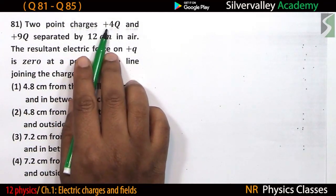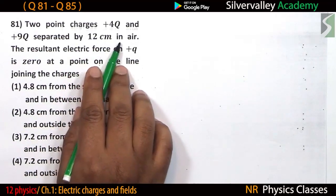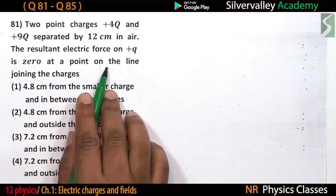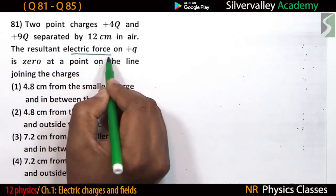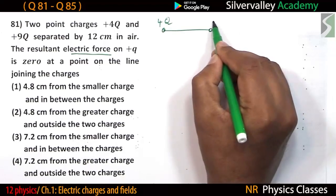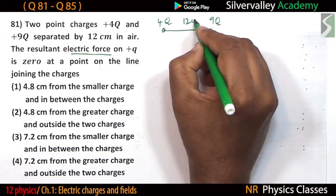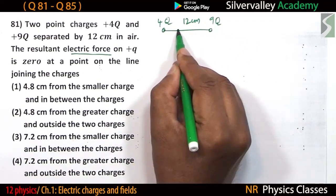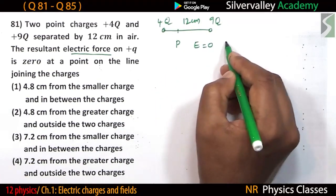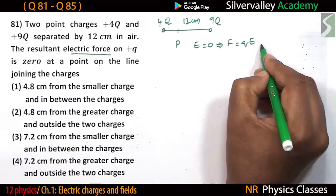Two point charges +4Q and +9Q are separated by 12 centimeters in air. The resultant electric force on a charge Q is zero at some point. There are two charges 4Q and 9Q separated by 12 centimeters. Let P be the point where the electric field is zero. If electric field is zero then force is also zero, because force equals Q times E, which equals zero.